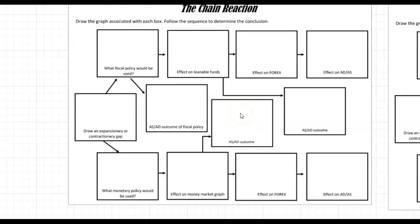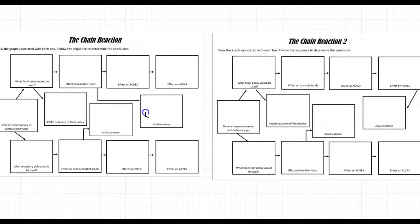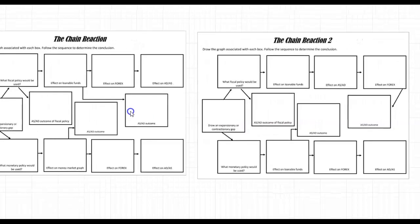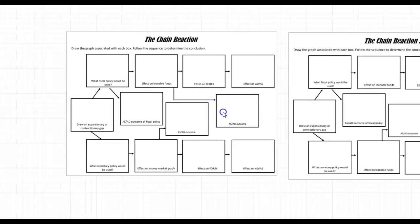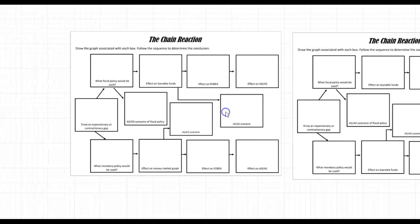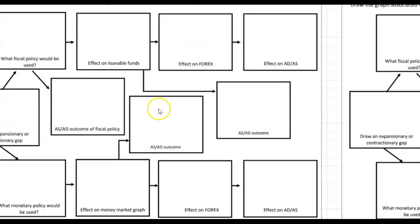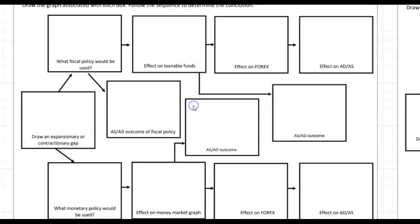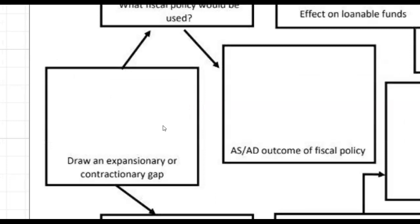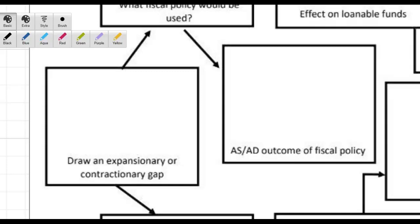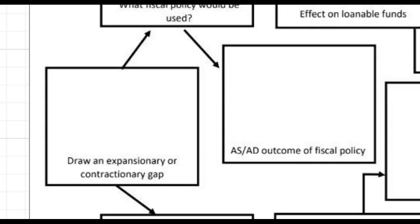You can kind of see I have two sides — same concept, but they go through different orientations, different connections. So I'm going to start with this first one. We're going to start with drawing an expansionary and contractionary gap. I'll go ahead and draw an expansionary gap, and this is going to be the ASAD.